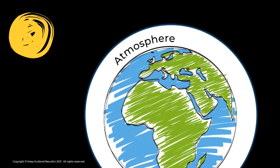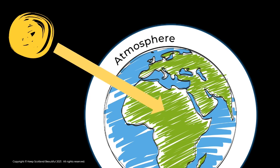So what is climate change? Here is our beautiful earth with the Sun in the distance. The Sun emits heat radiation which travels to the earth. Some of this heat is absorbed but a lot of it escapes back into space.